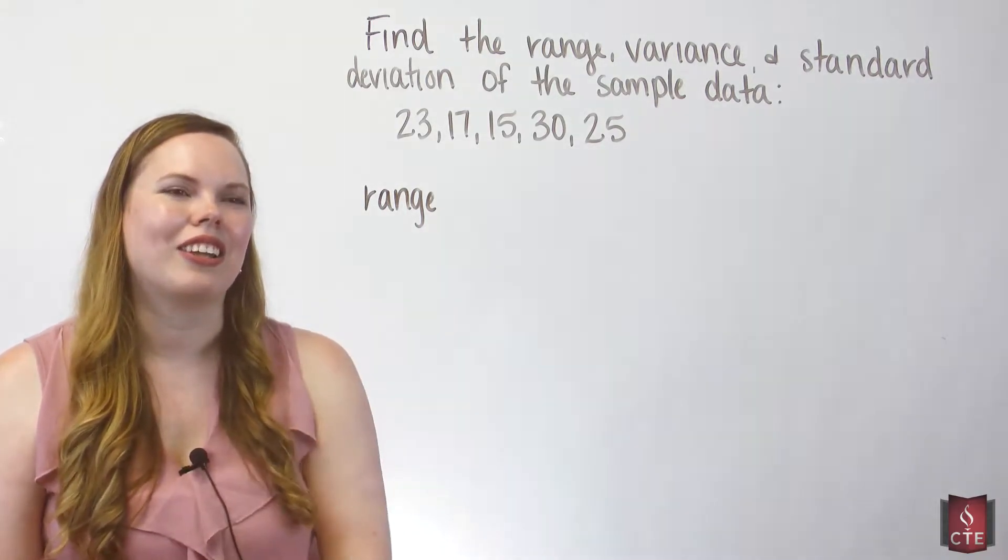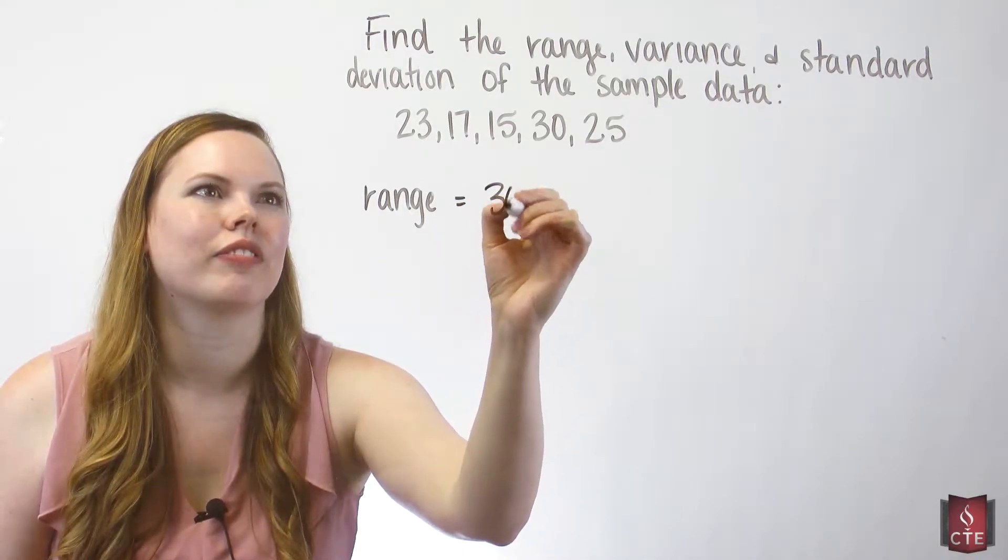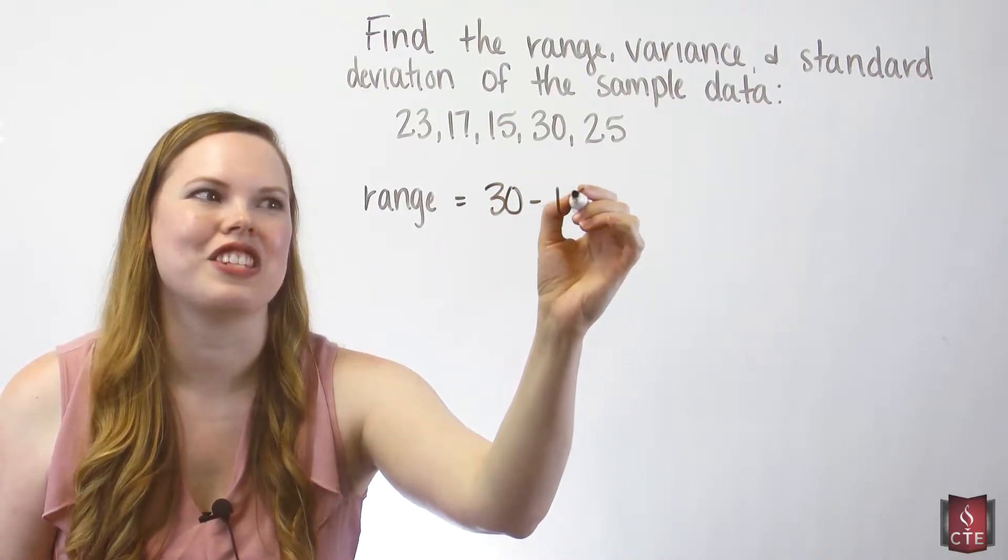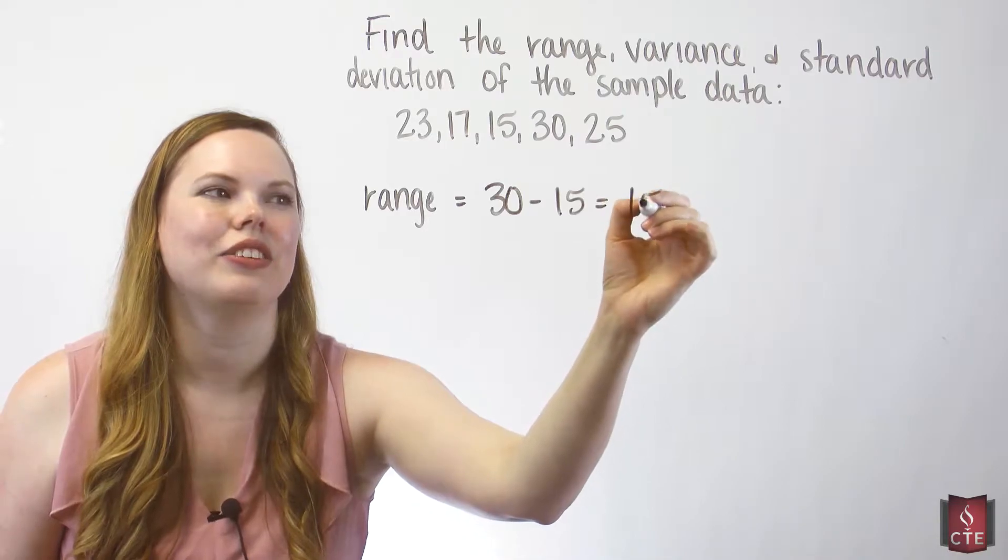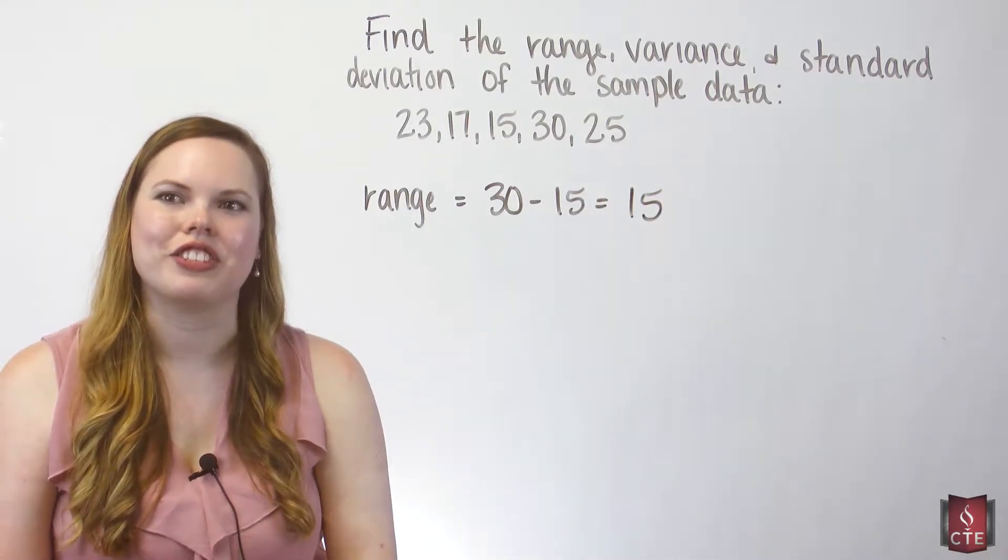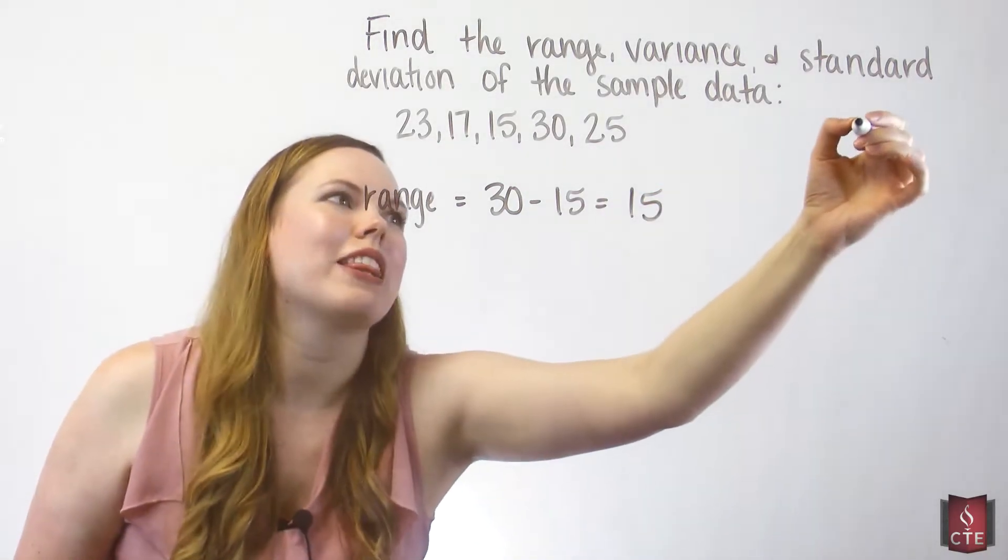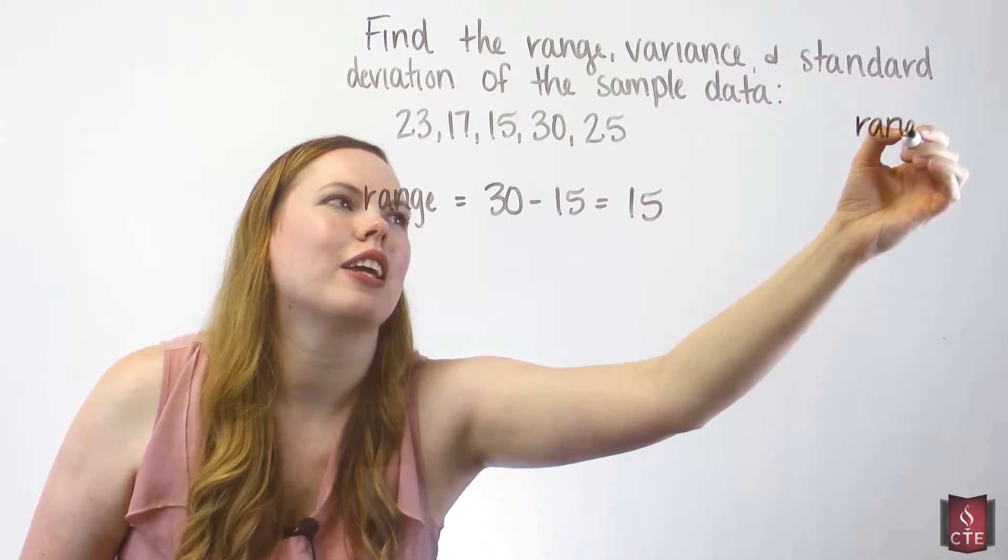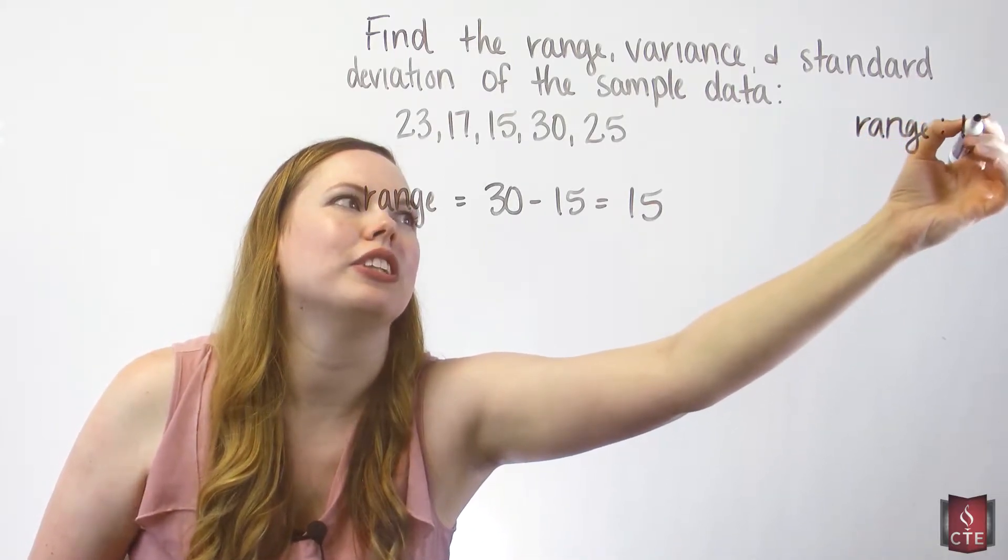Here it looks like the largest is 30 and the smallest is 15. So we have a range of 15. I'll make that note over here so that we can compare later to our other measures of variation.